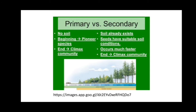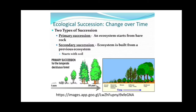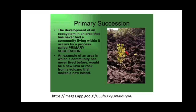There are different types of ecological succession that change over time. Primary succession starts from bare rock or barren land, while secondary succession is built from a previous ecosystem and starts with soil, not from barren land. For example, the formation of a temperate deciduous forest through primary succession requires approximately 300 years.